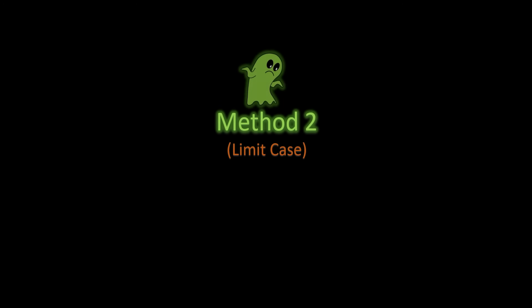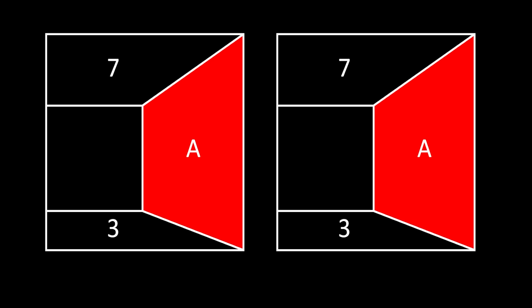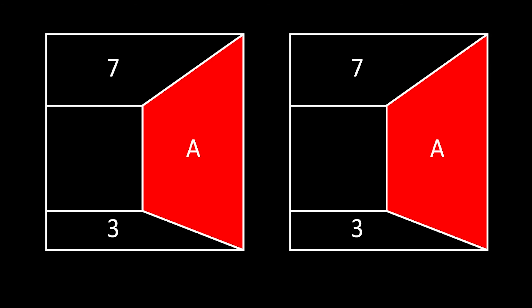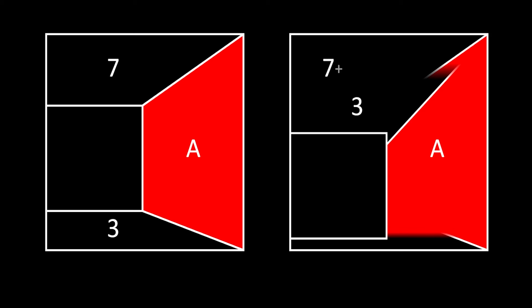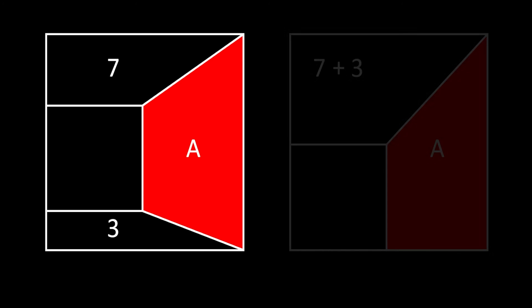Now let me show you the second method, which is actually my favorite — it uses the limit case. We label the red area as A again. For better understanding, I'll clone this image. Now let's consider the limit case in which we slide the small square down to the bottom of the big square, which pushes the bottom area to the top, so the top becomes equal to the sum of the top and bottom areas.